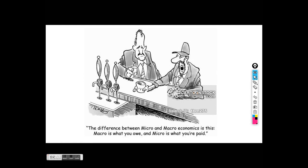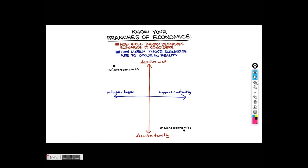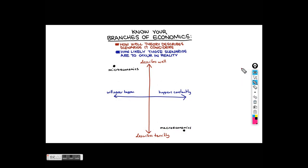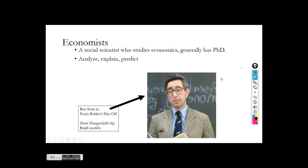There's a funny difference between micro and macro: macro is what you owe — where your taxes are going — and micro is what you're paid. There's a branches-of-economics chart here where one axis describes things very well and the other describes things not very well, ranging from 'will never happen' to 'happens constantly.' In the micro world we have picturesque models that describe things very well, though students sometimes criticize that they don't really happen. In macro, things like recessions happen constantly but we don't always have great theories — there tends to be more arguing in the macro world, and economists are not a solid block.